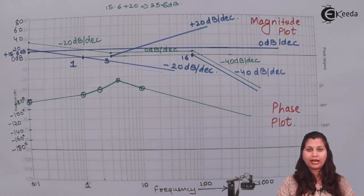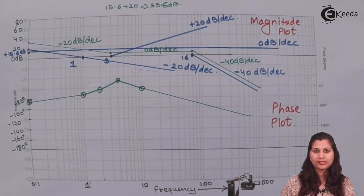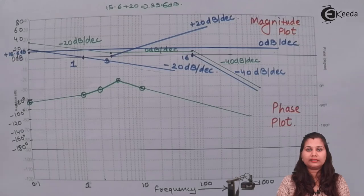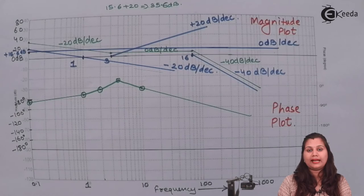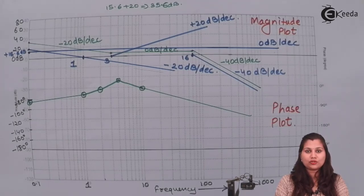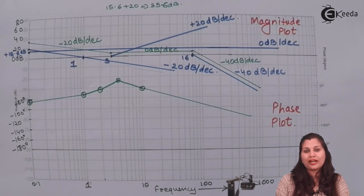To summarize: given the transfer function, substitute s = jω, then calculate the logarithm of the magnitude and the phase angle. Use the resulting tables to draw the magnitude plot and the phase plot on semi-log graph paper. This is how you sketch the Bode plot of a system when its transfer function is given.